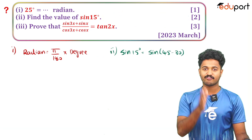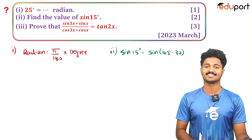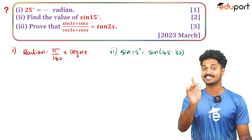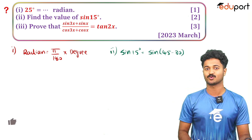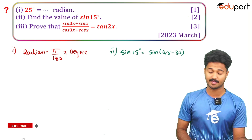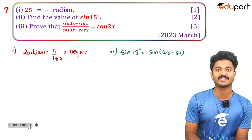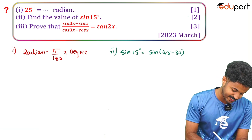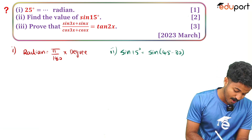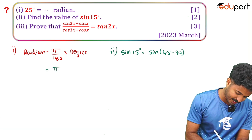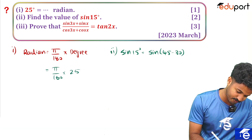We are going to talk about the first question from the 2023 public exam. The first question: 25 degrees equals dash radians. To convert degrees to radians, we multiply by π/180.